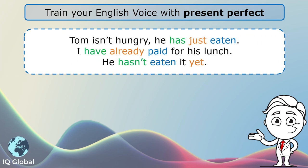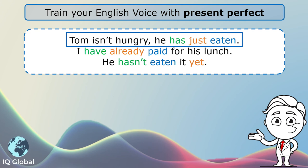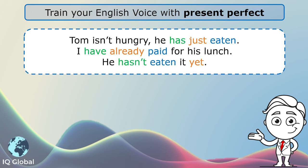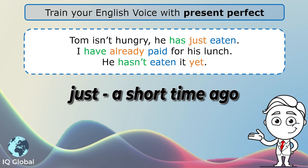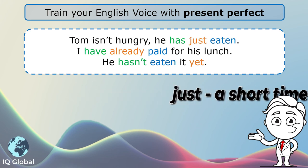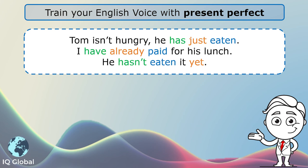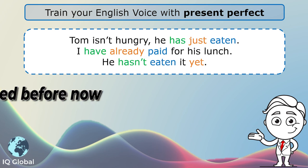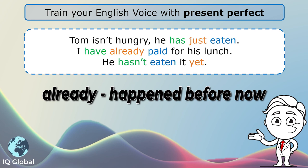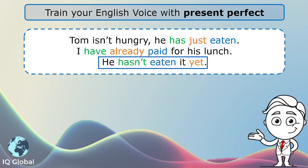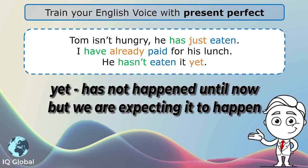Sentence one: Tom isn't hungry — he has just eaten. He's not hungry because he has just eaten a short time ago; the word just tells us that. Sentence two: I have already paid for his lunch — it already happened, something happened before now. Sentence three: he hasn't eaten it yet — yet implies that it hasn't happened but we are expecting it to happen.